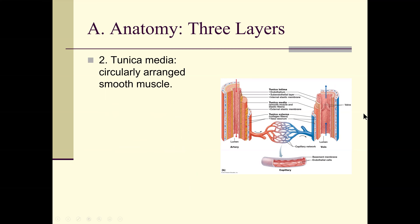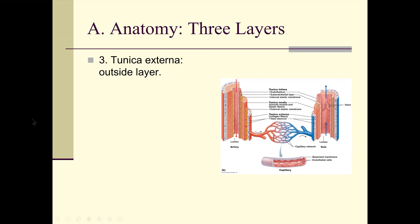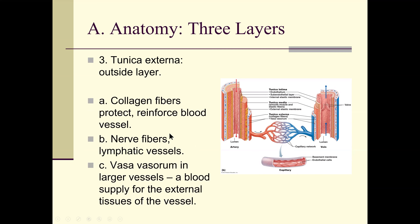The tunica media is the circularly arranged smooth muscle — it can contract or dilate, causing vasoconstriction or vasodilation. The tunica externa is the outside layer — collagen fibers reinforce blood vessels, nerve fibers surround them, and in very large blood vessels there's its own small blood supply within the tunica externa because those thickened layers need their own blood supply.